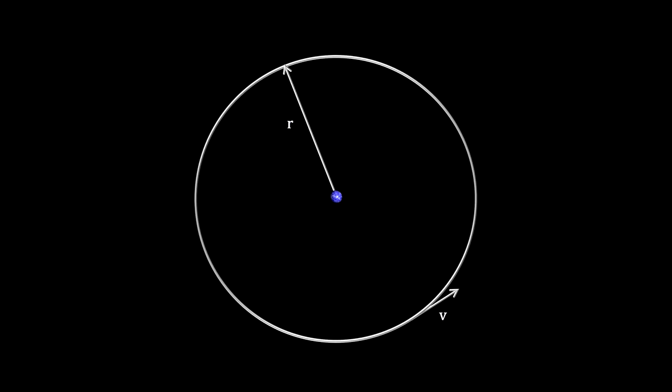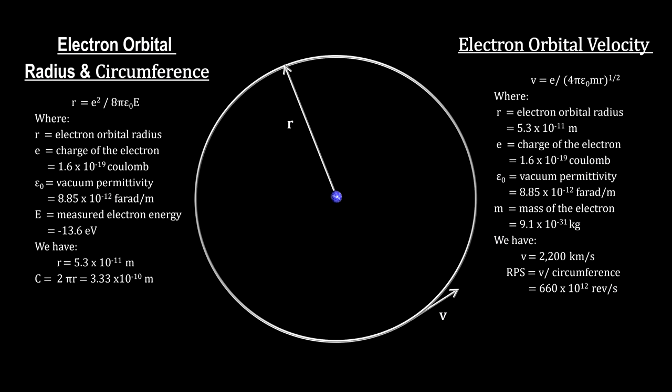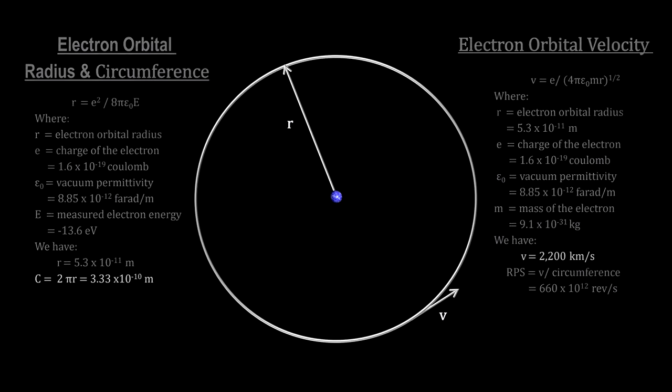In 1925, Louis de Broglie came up with the model that explained how electrons avoid falling into the nucleus. Earlier, we calculated the circumference and velocity of the electron.